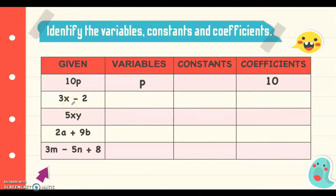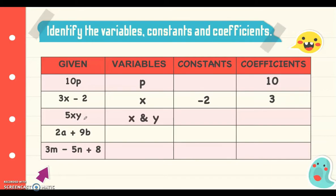Next, we have 3x minus 2. The variable is x. The constant is negative 2 — it is 2 but the operation beside it is subtraction, so we include that sign, making it negative 2. The coefficient is positive 3. Next is 5xy: the variables are x and y — there are two variables. There is no constant. The coefficient is 5.